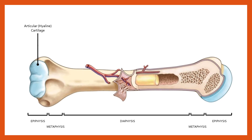On the ends of the long bones — the outside of the epiphyses — we have articular cartilage. It's called articular cartilage because it allows the bone to articulate, or form a joint, with another bone. The purpose of this cartilage is to reduce friction between bones that contact one another and to act as a shock absorber. You can watch the video on joints for more detail — it's sometimes referred to as hyaline cartilage.